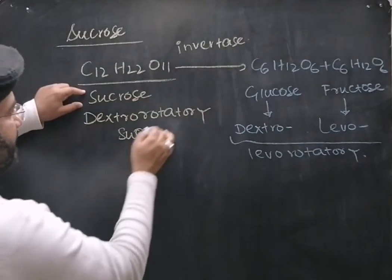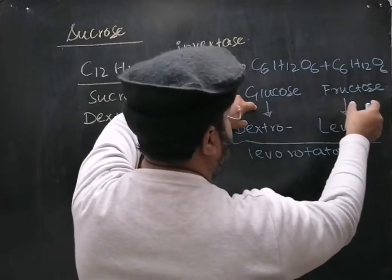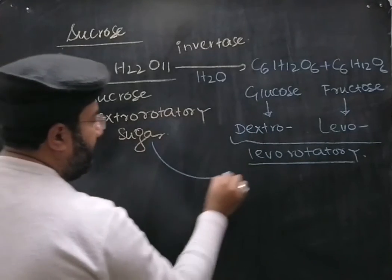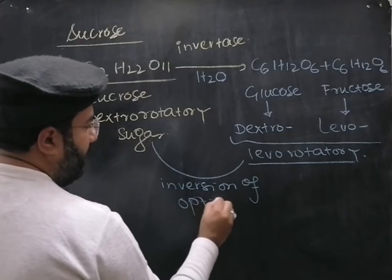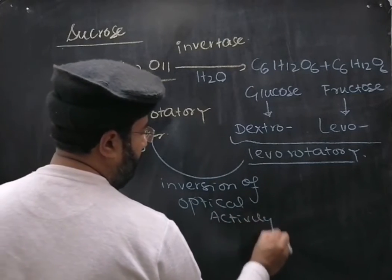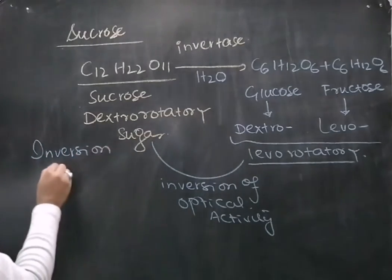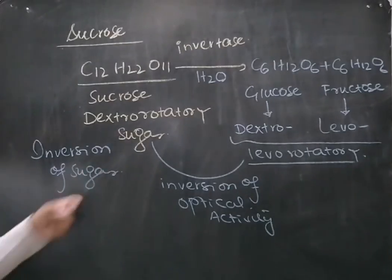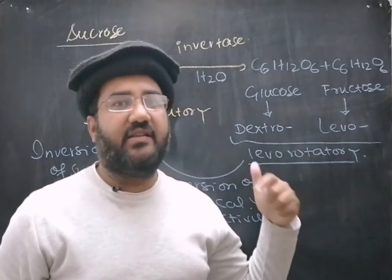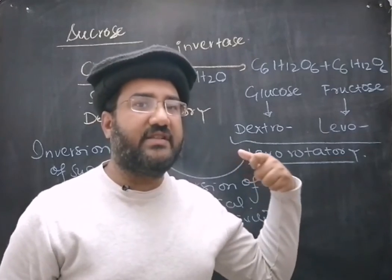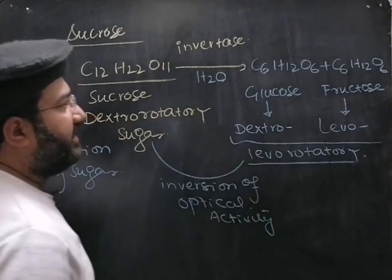Sucrose is dextrorotatory, but after hydrolysis it is converted into a mixture of glucose and fructose, which is overall levorotatory. So here, the inversion of optical activity is seen — that is why this reaction is called the inversion of sugar. The enzyme is called invertase, and it may also be called sucrase because it causes the hydrolysis of sucrose.